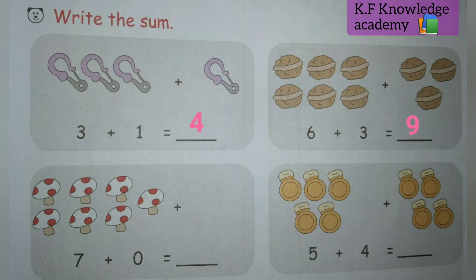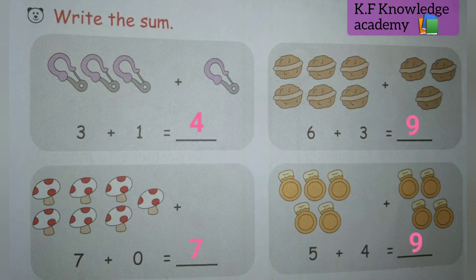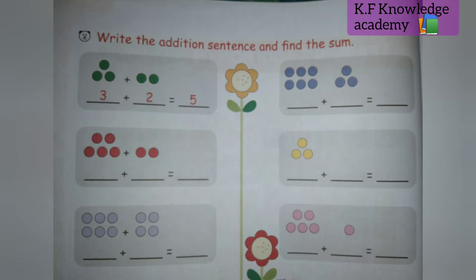In the next one there are seven mushrooms plus zero — nothing after addition, so it means seven plus zero is equal to seven. We will write seven. When you add zero to a number, the number does not change. There are five rings plus four rings, so five plus four — count: one, two, three, four, five, then six, seven, eight, nine — five plus four is equal to nine, we will write nine.